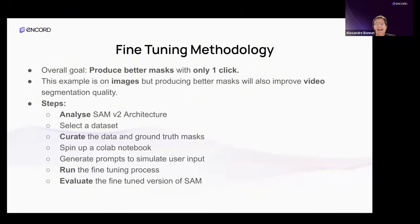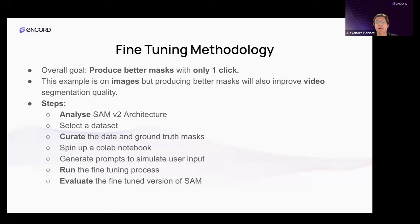The rough steps are: (A) analyze the SAM v2 architecture, (B) select and curate a dataset and ground truth masks, (C) spin up a Colab notebook, (D) generate prompts to simulate user input — or use actual user inputs to mimic a specific workflow, (E) run the fine-tuning process, and (F) use our infrastructure to evaluate the fine-tuned SAM v2.